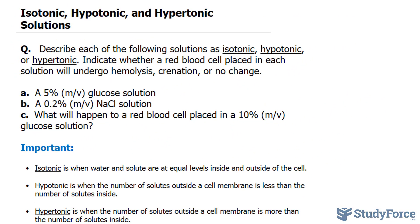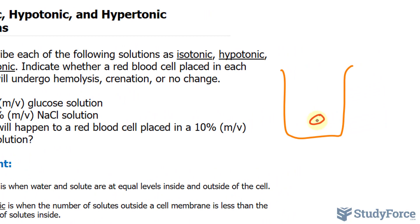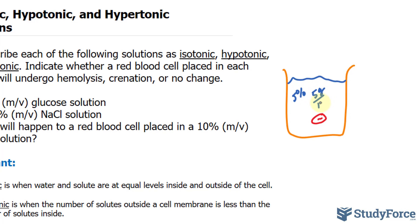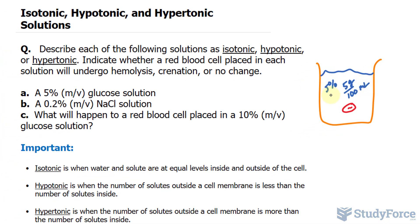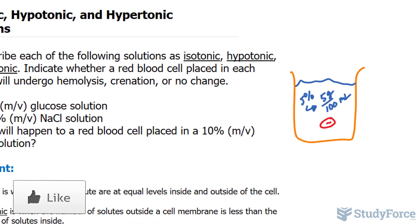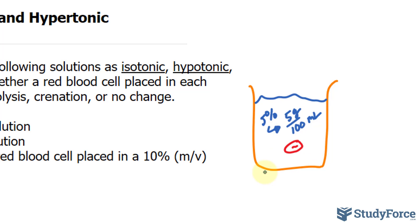Going back to A, we're placing a red blood cell inside a solution that contains 5% mass per volume of glucose — in other words, 5 grams per every 100 milliliters. Normally within a cell, the concentration of glucose is very much the same: it's at 5%. So because the concentration of glucose outside and inside the cell are the same, water flow in and out of the cell will be at equilibrium. This is an isotonic solution, and no change will occur to the cell.